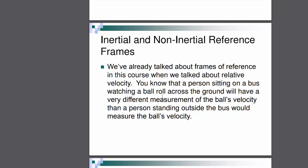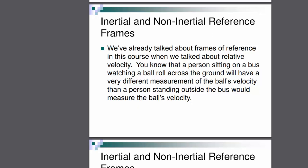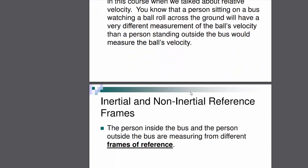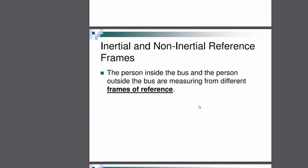Now, let's discuss an example: a person sitting on a bus watching a ball roll across the ground will have different measurements of the ball's velocity than a person standing outside the bus. So the person inside the bus and the person outside the bus are measuring from different frames of reference. The bus has a different frame of reference.